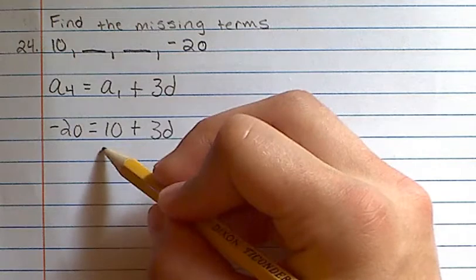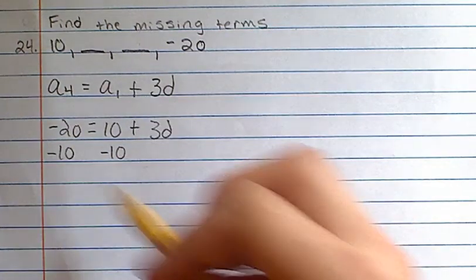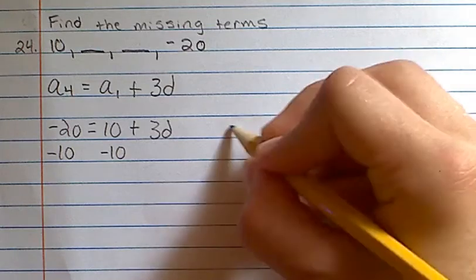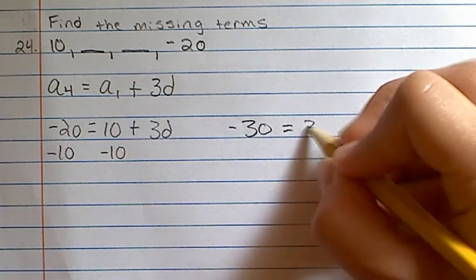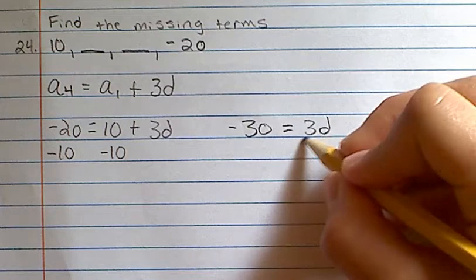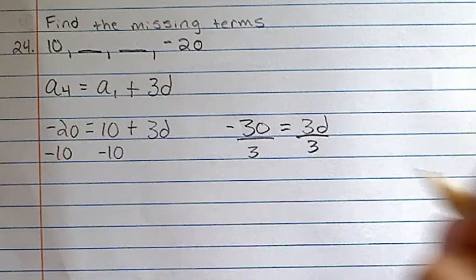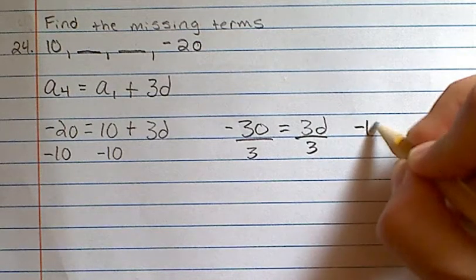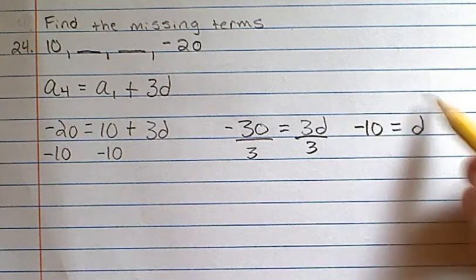Now we can subtract 10 from both sides. That gives us negative 30 equals 3d. Divide both sides by 3, and we get negative 10 equals d. So now we know what our difference is.